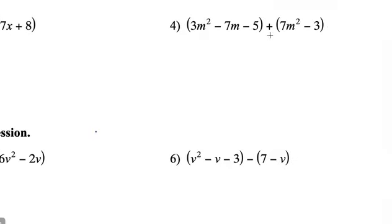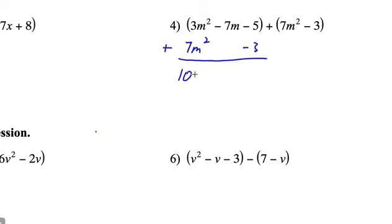Here's one more adding problem. We line up our like terms and add. We get 10m squared; negative 7m just tags along; and negative 5 plus negative 3 equals negative 8. So the sum is 10m squared minus 7m minus 8.